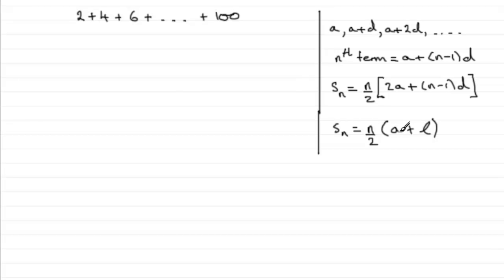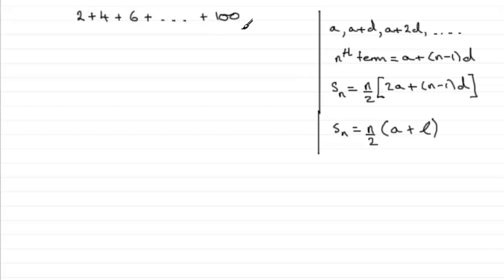When it comes to doing this question, I'm going to use this second formula. I know the first term — it's 2 — and I know the last term — it's 100. The only problem is I don't know how many terms there are, but I can easily work that out. I'll show you how even when it's not obvious.